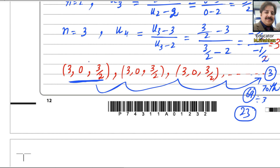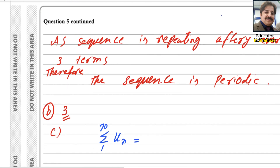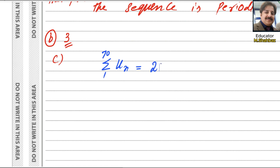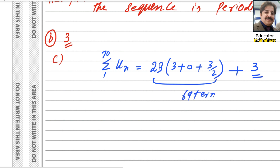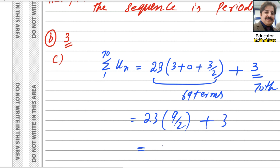So if you multiply 23 with the sum of one cycle, you get the sum of 69 terms, and then add the 70th term which is 3. We multiply 23 by (3 + 0 + 3/2), and add the 70th term 3. That gives 23 multiplied by 9/2 plus 3, and finally you get the answer 106.5. This is the answer for part C, and question number 5 is done.